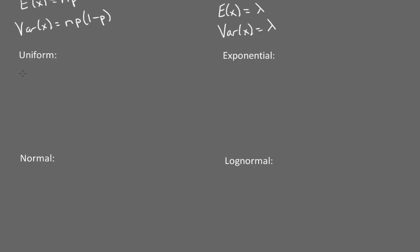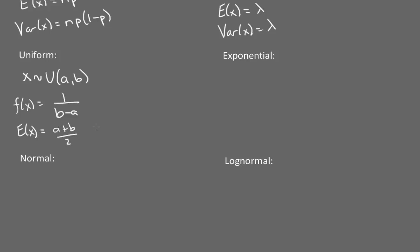With the uniform distribution, we often see that x is approximately uniform between a and b. The density is simply 1/(b−a), the expected value is (a+b)/2, and the variance is (b−a)²/12.